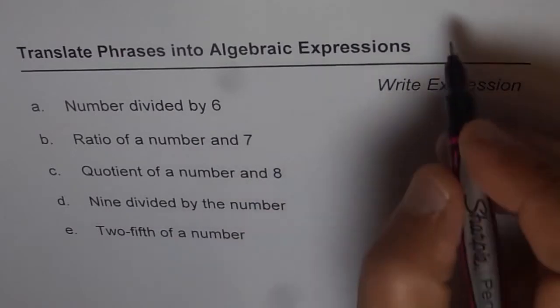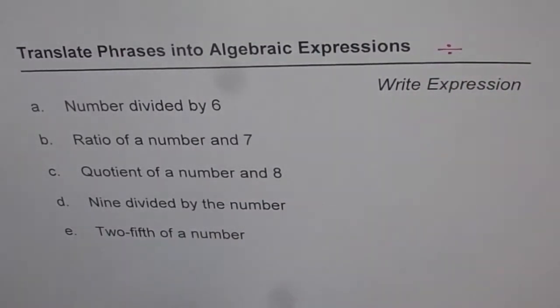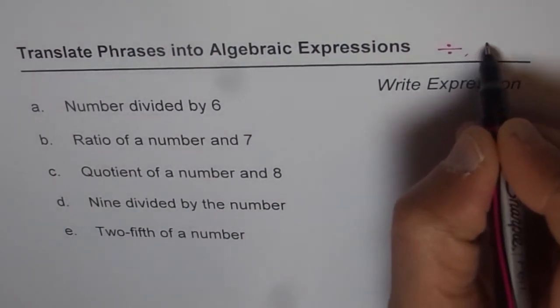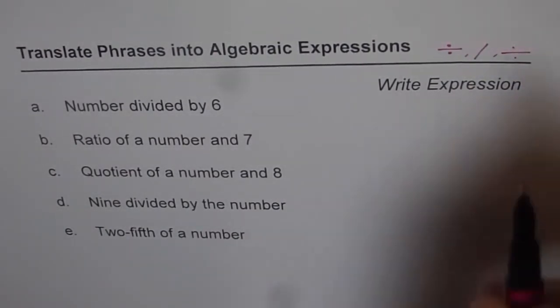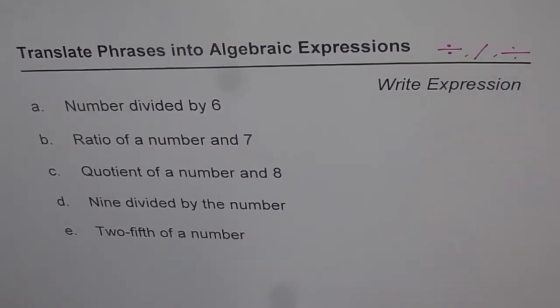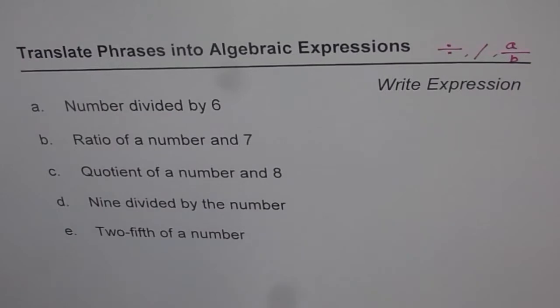This is all about division, which we can write like this or like this, or even a straight line where we have something in the numerator and something in the denominator. This is a over b, for example. That is division.